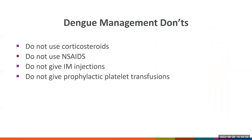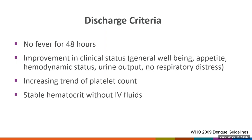Some don'ts in dengue management: do not use corticosteroids — they have not been demonstrated to have benefit in dengue severity or progression. Do not use NSAIDs, as they can increase the risk of bleeding. Do not give intramuscular injections. And do not give prophylactic platelet transfusions — these have not demonstrated any benefit in dengue patients. Dengue patients can go home when they have been afebrile for more than 48 hours, when there is improvement in clinical status, when the platelet count has an increasing trend — platelets don't need to be completely recovered for the patient to go home — and when the hematocrit is stable without IV fluids.